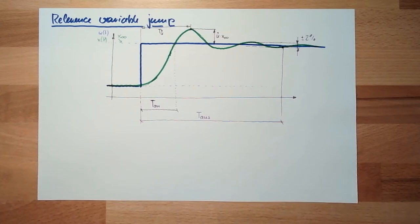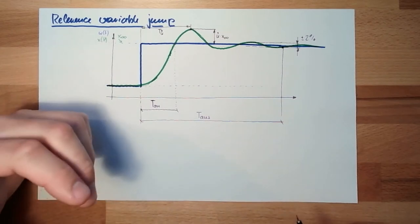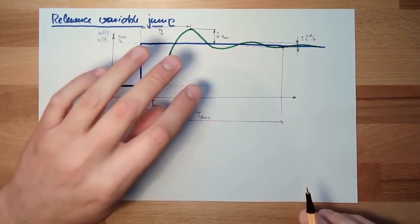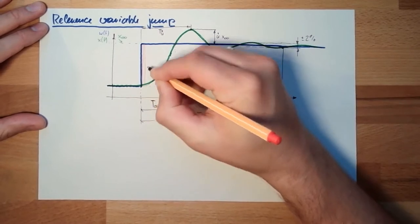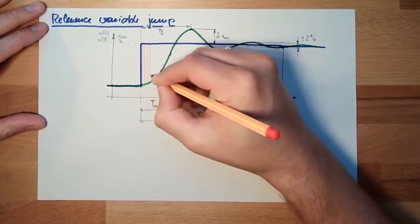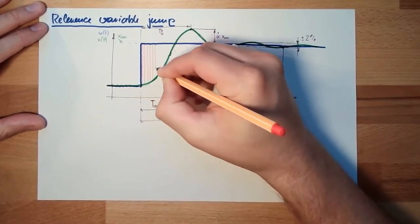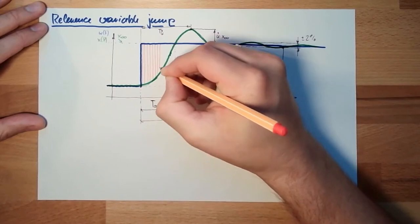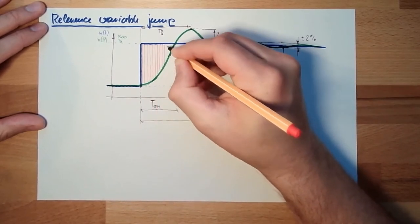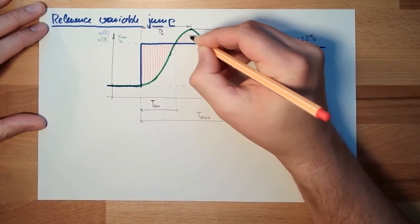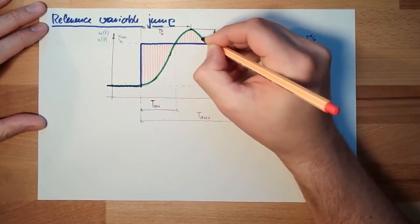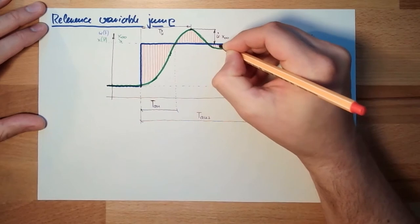Basically what we need to compare is the area of error. So here is an error, this is the control error, the difference between the reference value and the regulated value. This is the error.